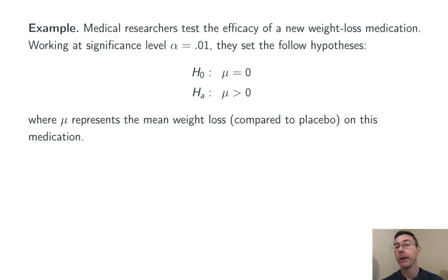Example 2. Medical researchers test the efficacy of a new weight loss medication. Working at significance level alpha equals 0.01, they set these hypotheses: the null hypothesis that the mean weight loss compared to placebo is going to be zero, and an alternative hypothesis that the mean weight loss compared to placebo is positive.